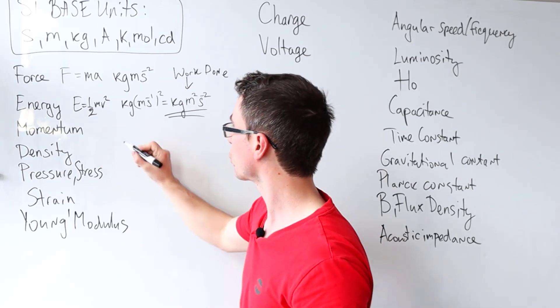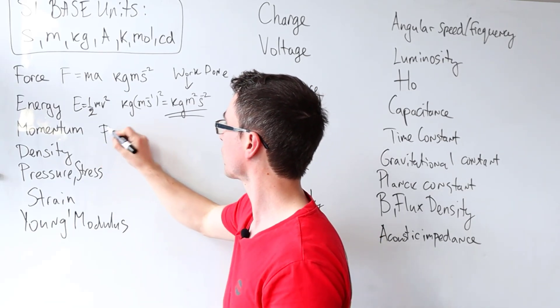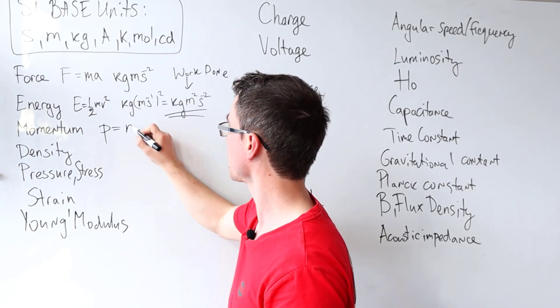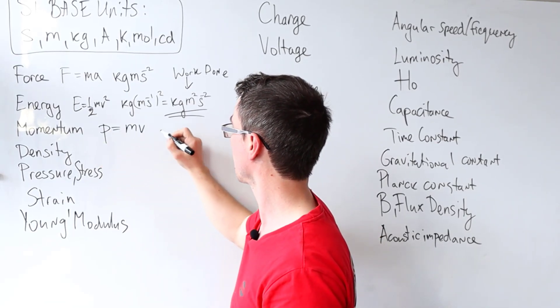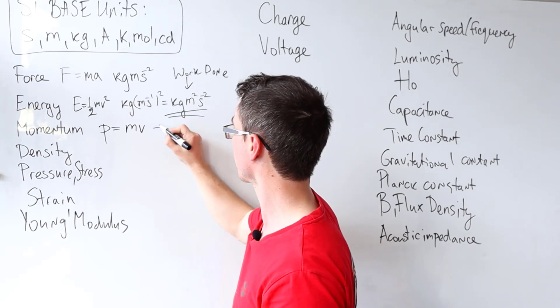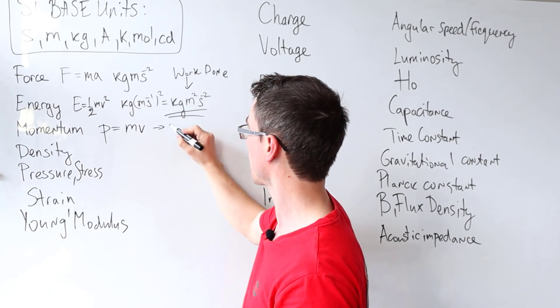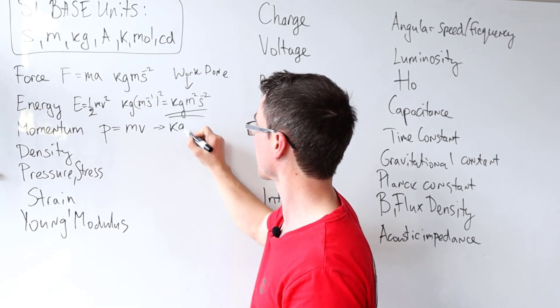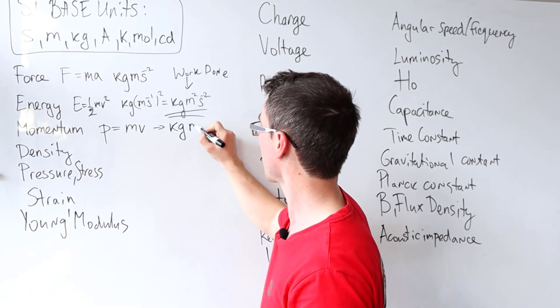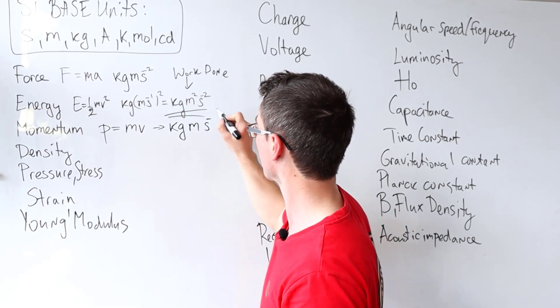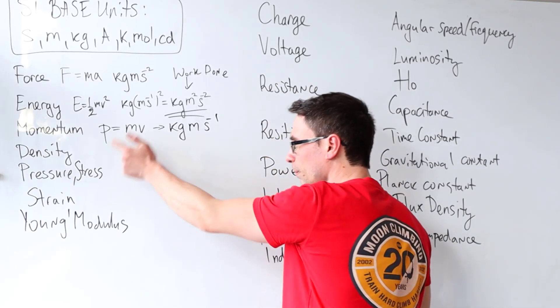Moving on to momentum. p is equal to mass times velocity, so the base unit of that will be kilograms ms to the power of minus one.